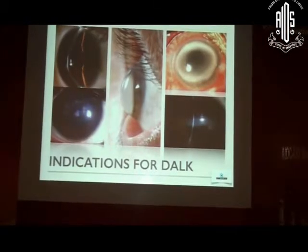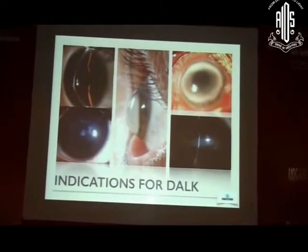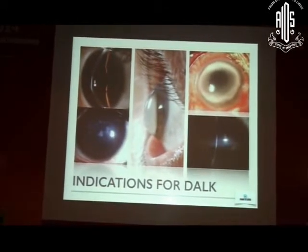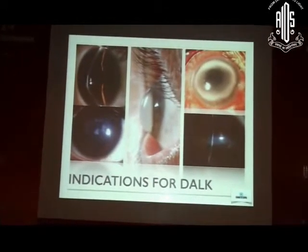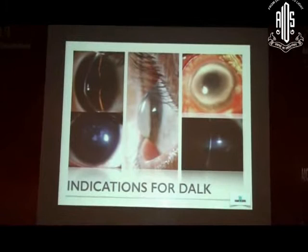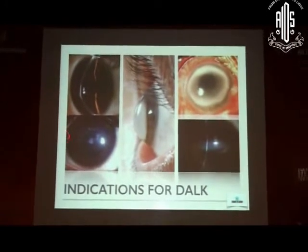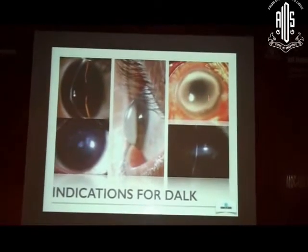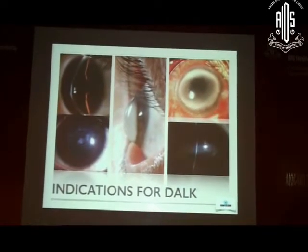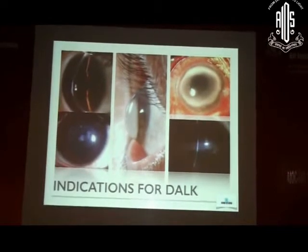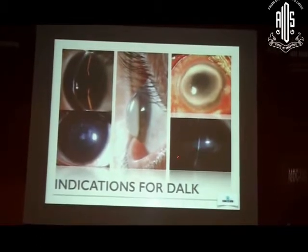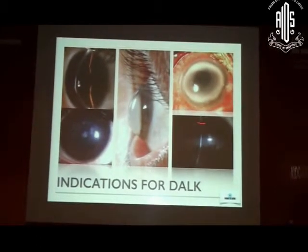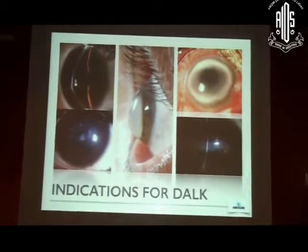So we excise the unhealthy part of the stroma and replace it with new stromal tissue. There are a variety of indications: ectasias, stromal dystrophies, stromal infectious keratitis — certain selected ones — and of course corneal scars.